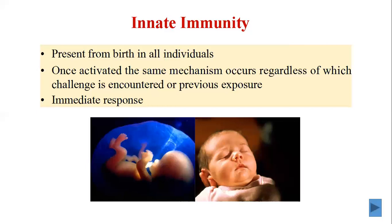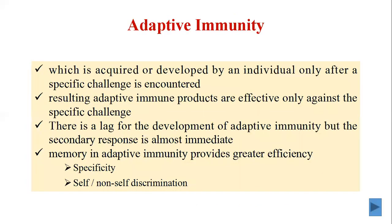Innate defense mechanisms are mediated by cellular effector cells and non-cellular effector molecules such as complement or lysozyme. Cellular elements of the innate immune system are generated in the bone marrow and migrate to the blood and then to different tissues of the body. Tissue-residing macrophages, dendritic cells, and mobile phagocytic cells such as eosinophils, neutrophils, monocytes, as well as NK cells — natural killer cells — represent the major cellular elements of innate immunity.